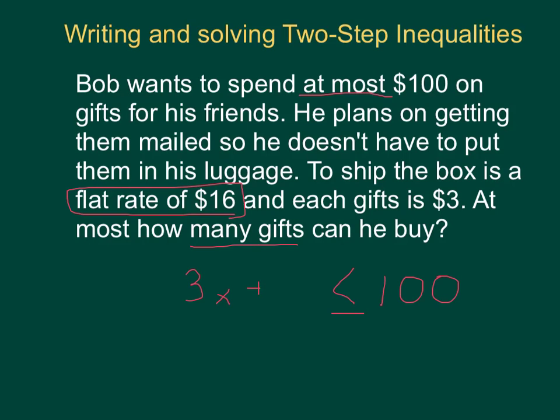And then we're going to take that total cost, and we're going to need to add that to $16 because $16 is the shipping. He can put as many as he wants in the box. We're assuming that since it says a flat rate. So we get the inequality of 3x plus 16 is less than or equal to 100.